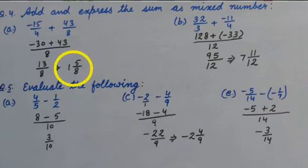Yes, 1 and 5 by 8. Part b: 32 upon 3 plus minus 11 upon 4. LCM is 12. So, numerators will be 128 plus minus 33. Very good.